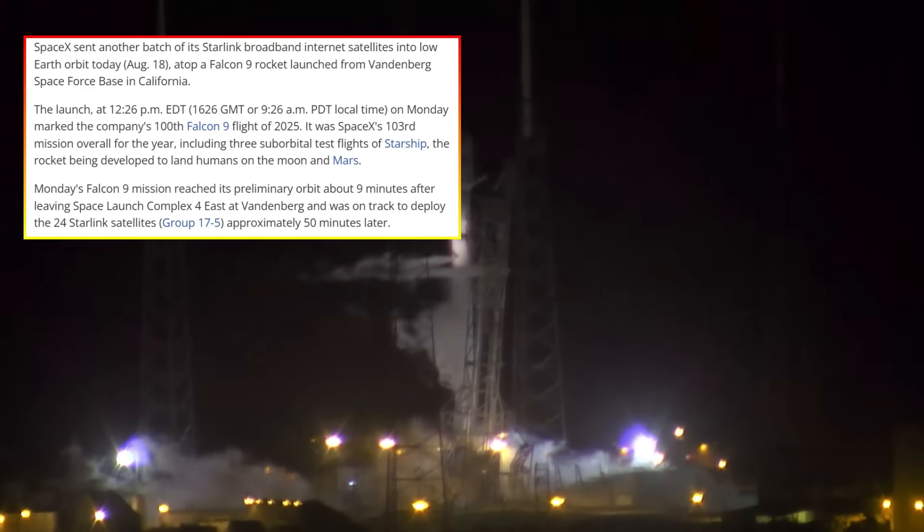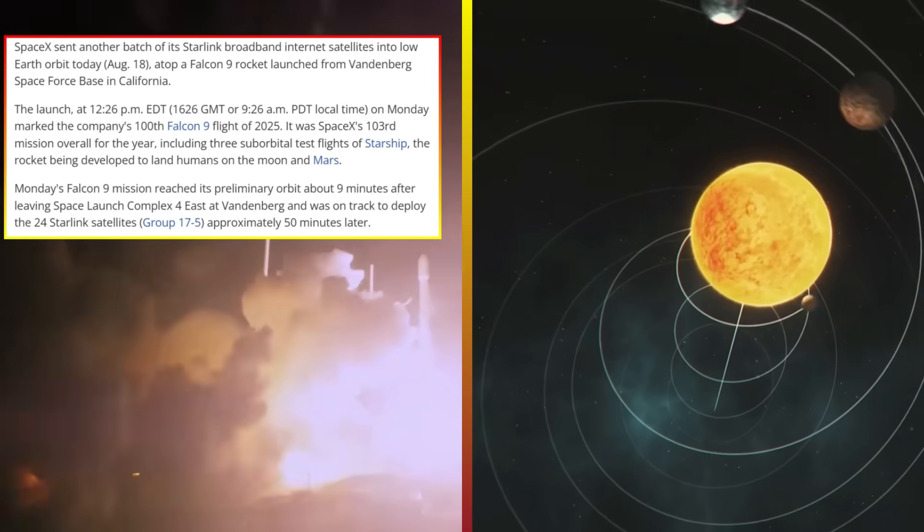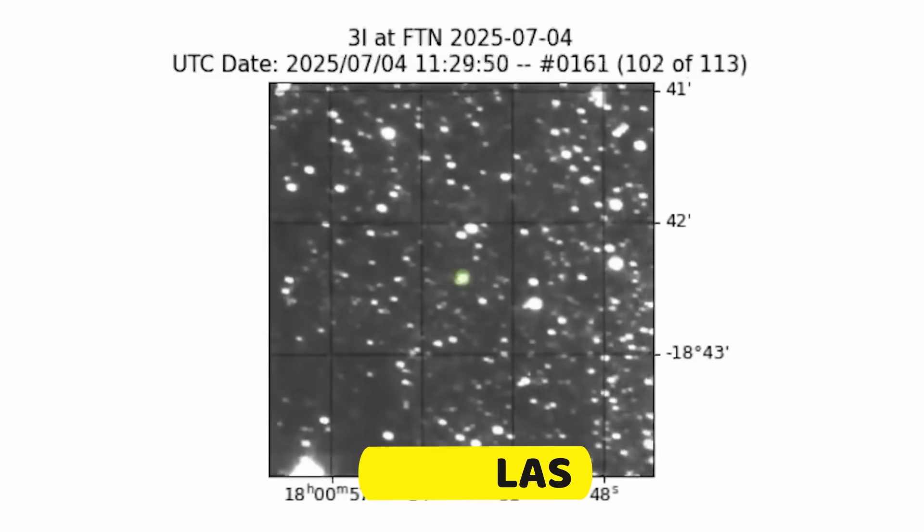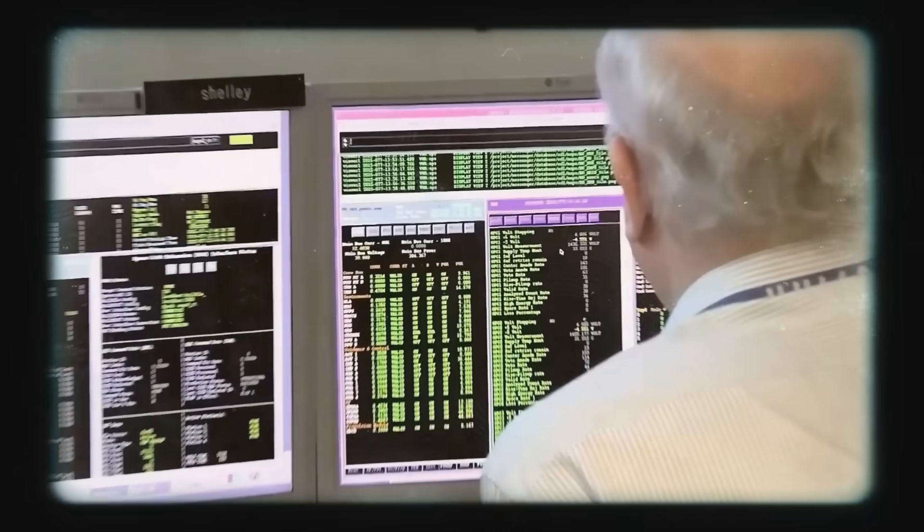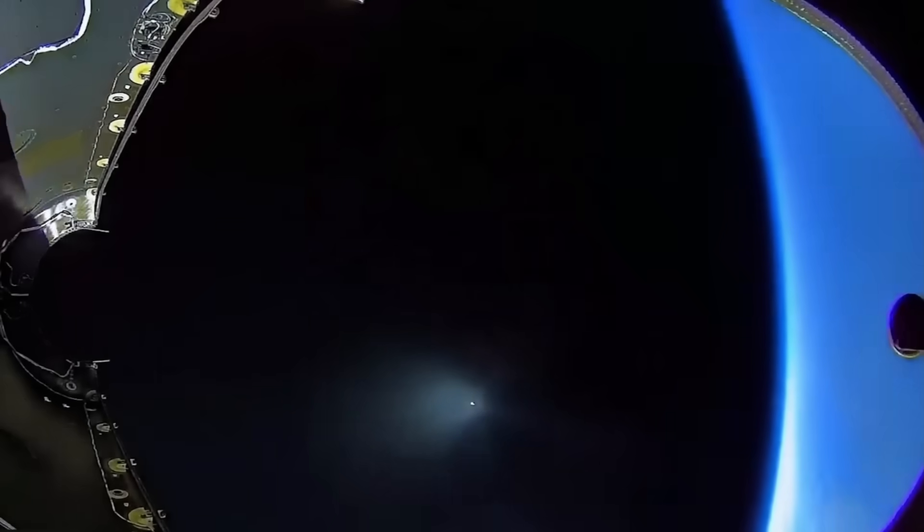For the first time in history, a Falcon 9 rocket was said to have targeted something not of this solar system - the interstellar visitor 3i/ATLAS. What followed has scientists, the military, and even historians asking the same question: What exactly just happened out there?